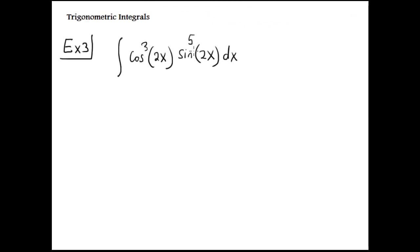In this case, both exponents are odd numbers. Then I recommend you take the smaller, the three, and separate. This integral is now cosine squared 2x sine to the fifth power 2x times cosine 2x.